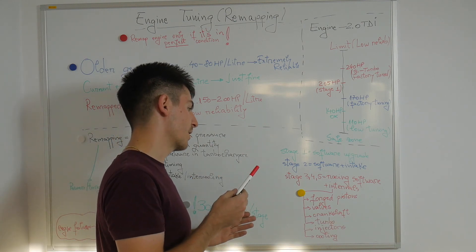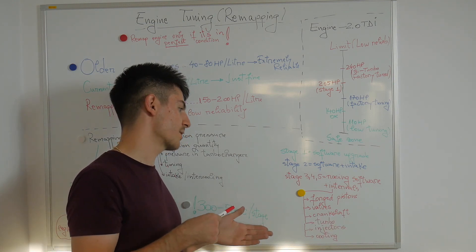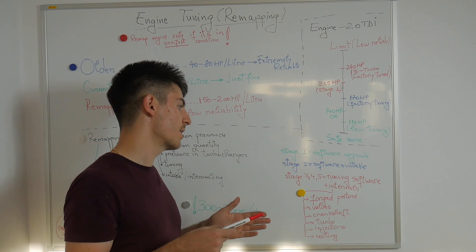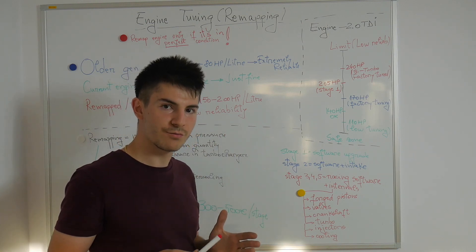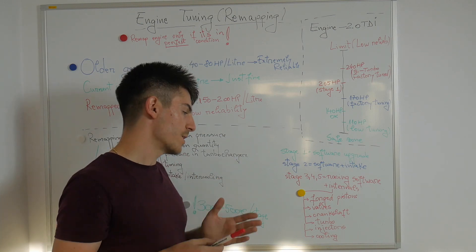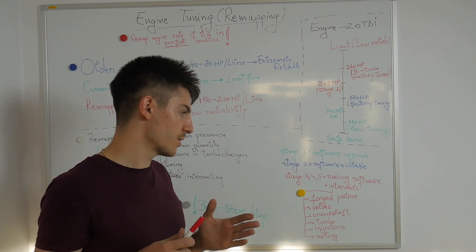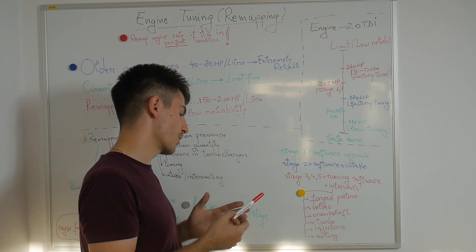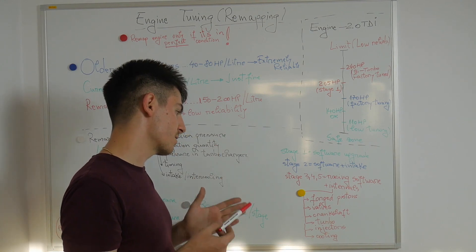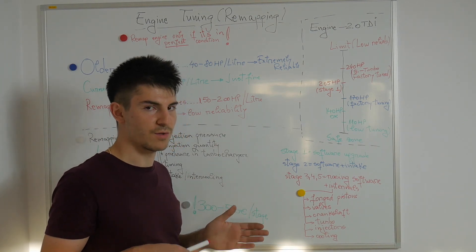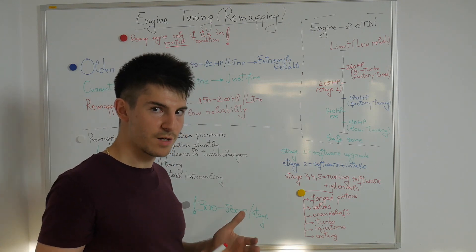In stage three, four and five, some manufacturers have stage two plus, stage three plus, etc. In stage three, four and five we will have racing software which will require racing components and we should change the internals. Internals being pistons, valves, crankshaft in some cases, turbocharger if you already have a turbo. If you want more power you should upgrade to a bigger turbocharger for bigger pressure.